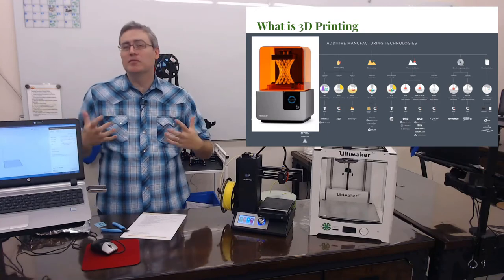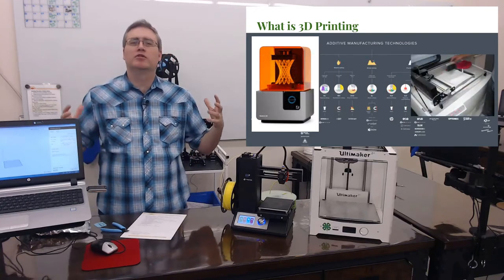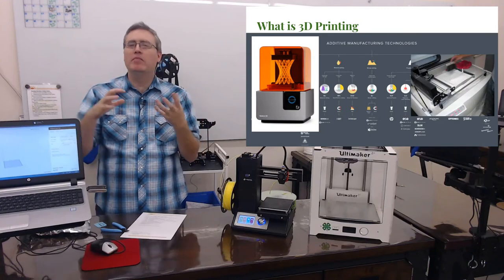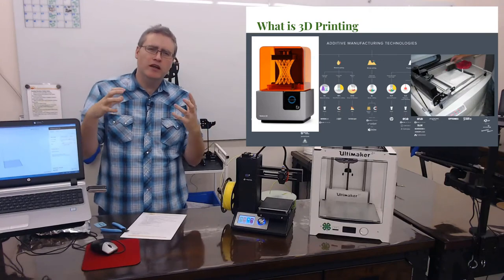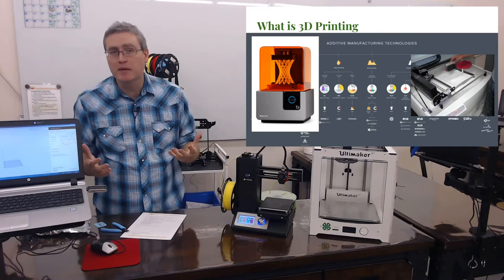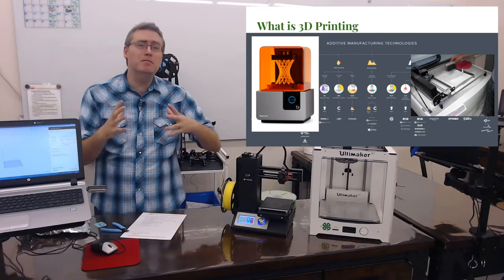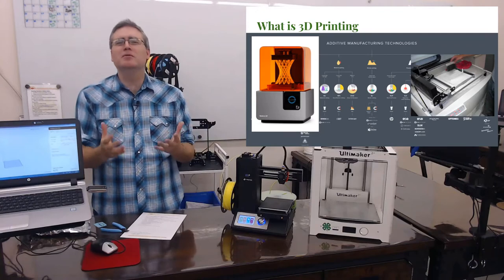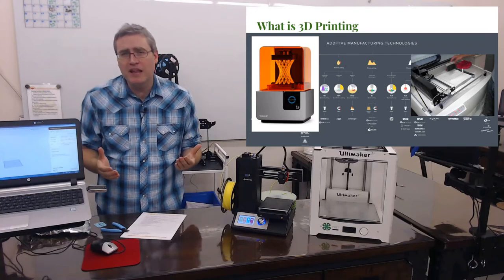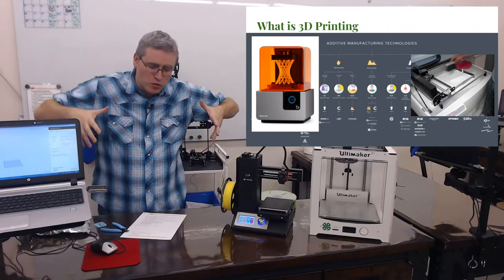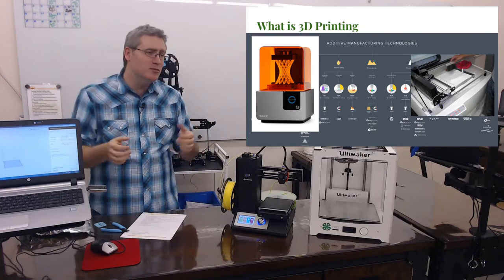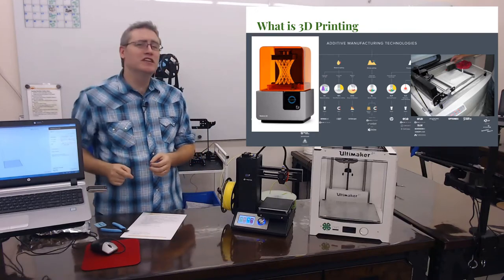There's also powder-based 3D printing that fills up the print area with a powder that it binds together, either with liquid glue or sometimes the powder is metal and they use a high-powered laser to melt it together. They use this to build parts for airplanes and after the print is done they just reach into the powder and pull the 3D printed part out. It's super cool. We don't have those either.